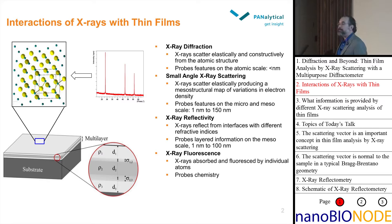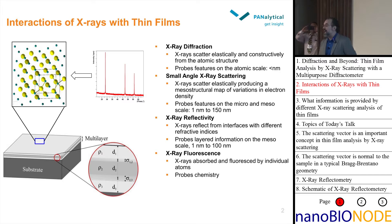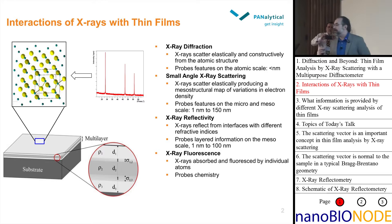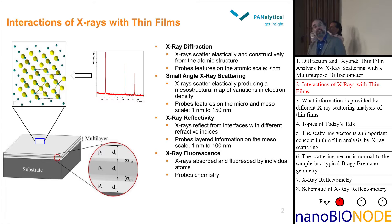What happens when an x-ray beam hits our sample? We have elastic scatter, which may produce the phenomenon of diffraction giving us atomic scale information. We also have small angle scatter — another form of elastic scatter — giving us information on a mesostructural level, a larger scale and in a different dimension. Additionally, we have x-ray reflectivity: x-rays that reflect from the surfaces of our sample. And finally we do have some x-ray fluorescence, which I'm not going to talk about because I'm a crystallographer.